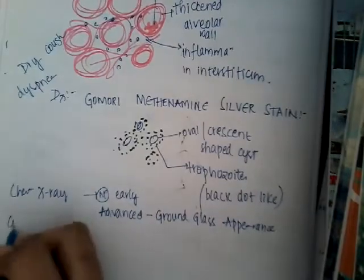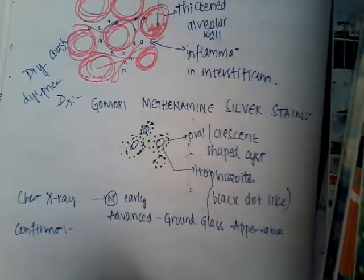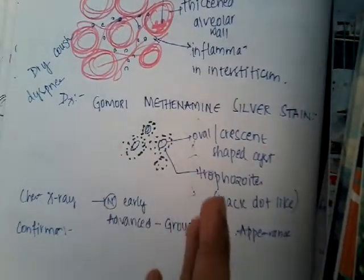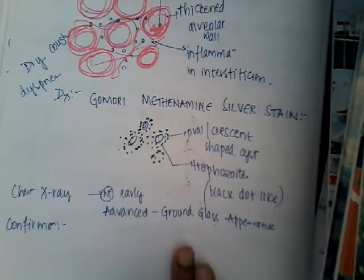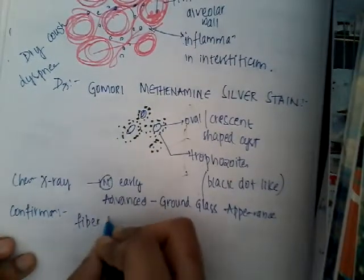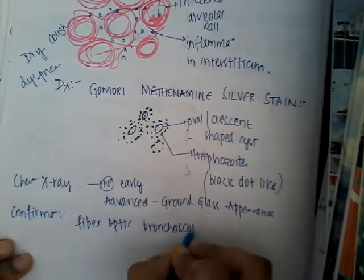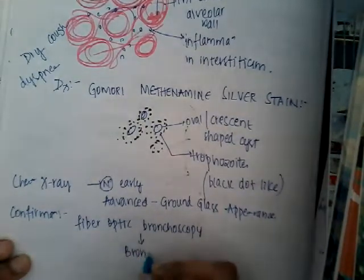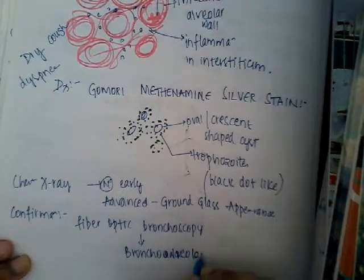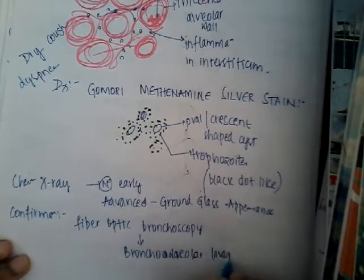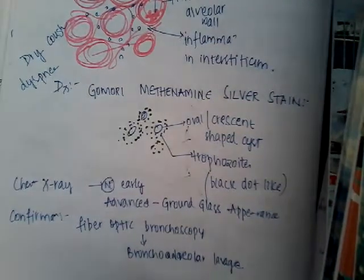To confirm the diagnosis, if you are not able to obtain sputum and staining is difficult, you will need to perform fiber optic bronchoscopy and take a bronchoalveolar lavage. In this lavage specimen you look for the organisms, and if organisms are positive you can confirm it is Pneumocystis carinii pneumonia.